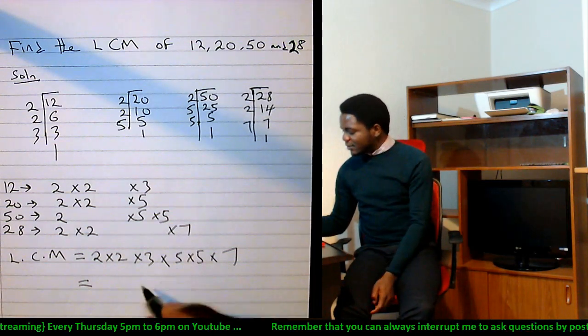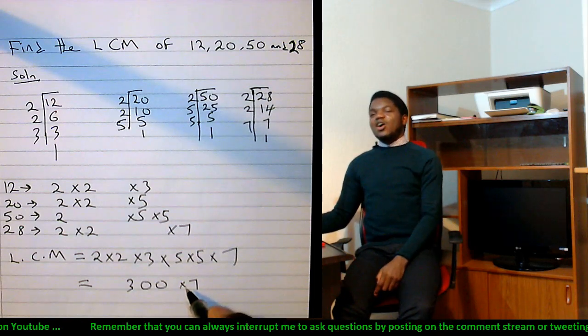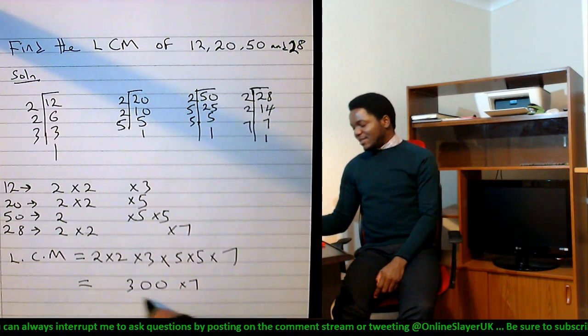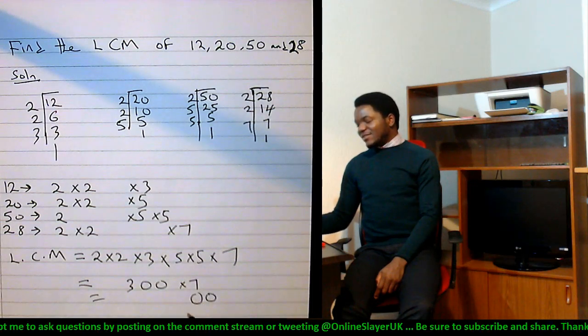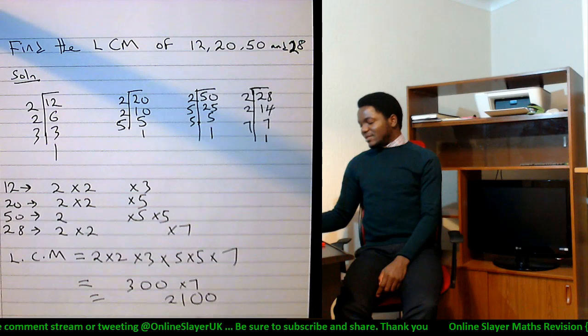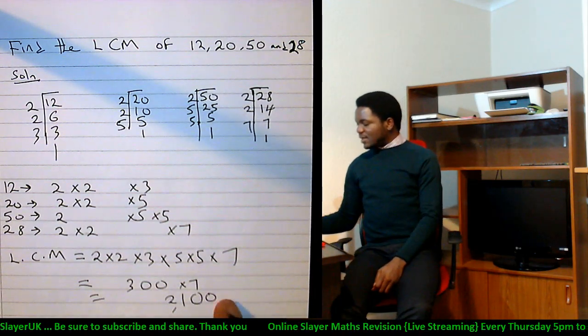Sixty times five is three hundred, and three hundred times seven. I'm just gonna quickly do that for you. When you have three hundred times seven, all you need to understand is that when you've got any number of zeros behind something, just keep those zeros there already, they're waiting for you, they're going nowhere. Three times seven is 21, so that's your answer: 2100.